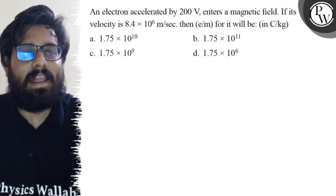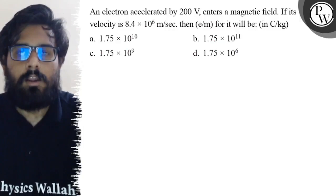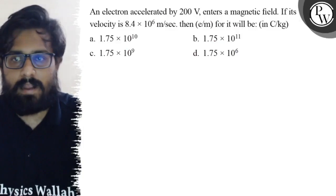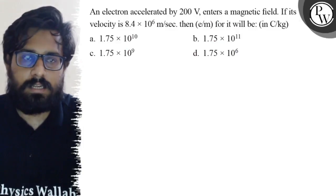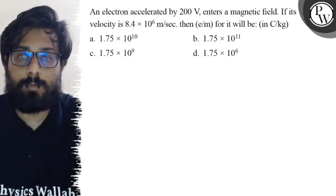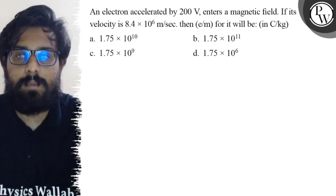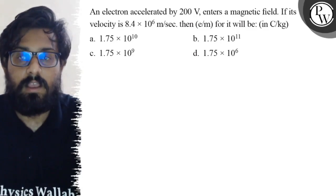Hello, so let's see the question. An electron accelerated by 200 volts enters a magnetic field. If its velocity is 8.4 × 10⁶ meters per second, then e/m (specific charge) will be: Your first option is 1.75 × 10¹⁰.